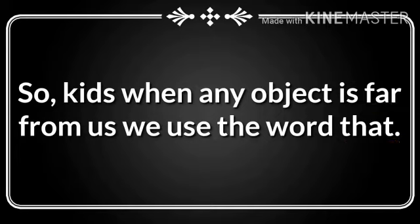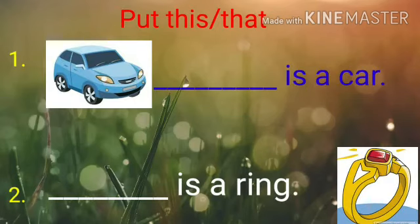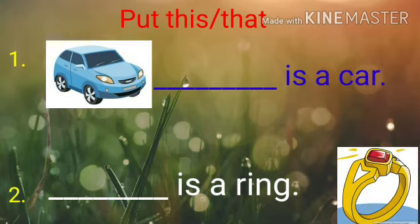Now let us do one combined exercise on the use of 'this' and 'that'. So let's start. In sentence number one, you can see a picture of a car. Then it says: 'Dash is a car.' Students, you can see the picture of the car is near to the dash, so what we will use for near objects? We will use 'this'. This is a car.